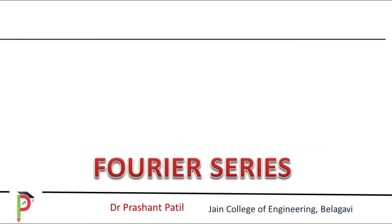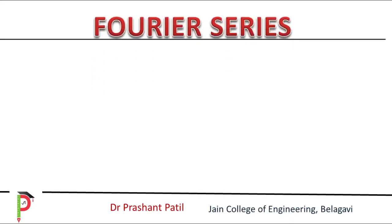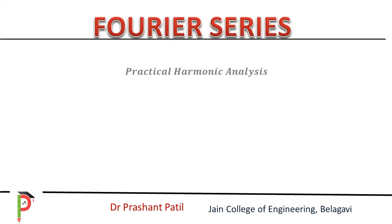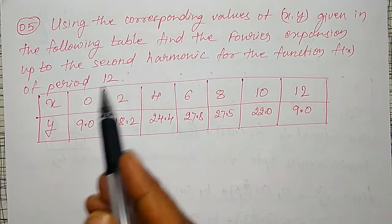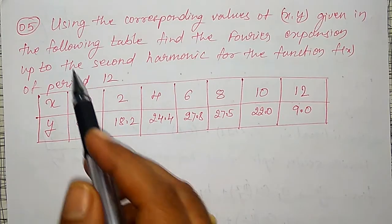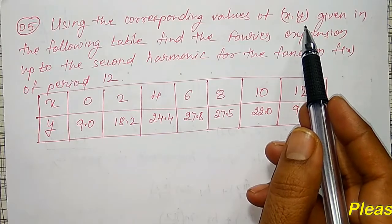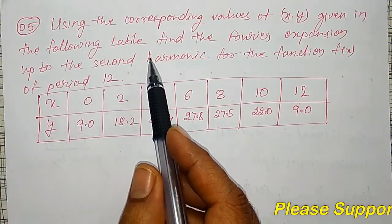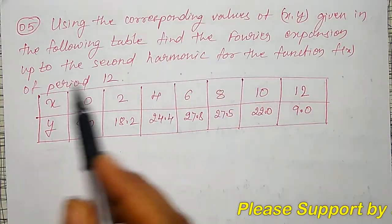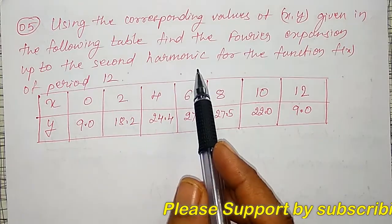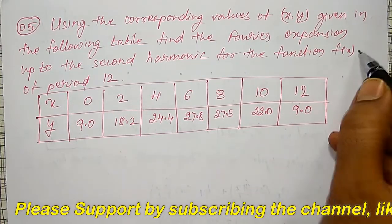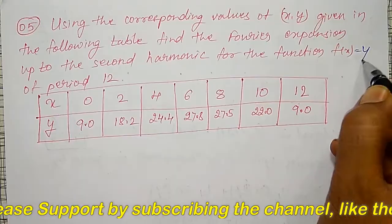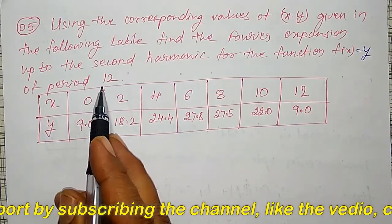In this video, I am going to discuss Fourier series. I am going to solve a Fourier expansion up to the second harmonic, that is, using the corresponding values of X and Y given in the following table, find the Fourier expansion up to the second harmonic for the function F of X, that is Y, where Y equals F of X, of period 12.